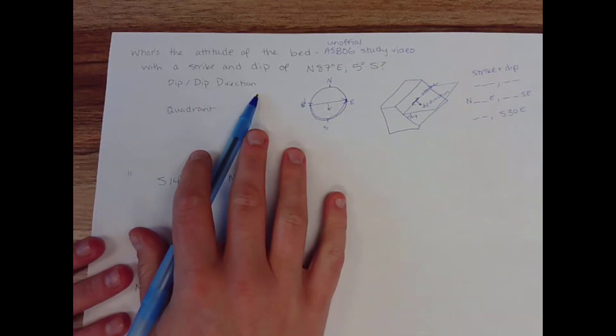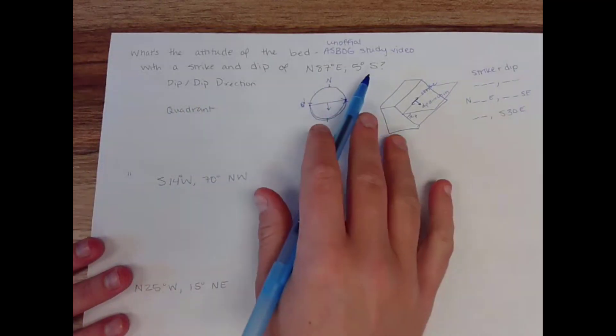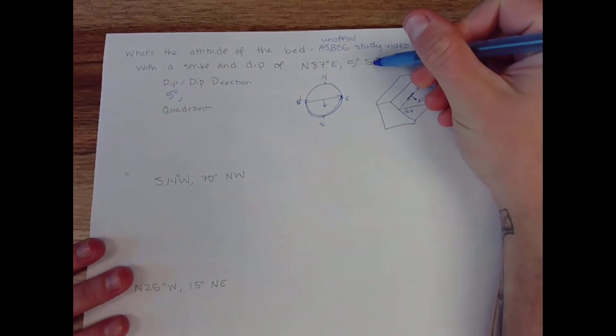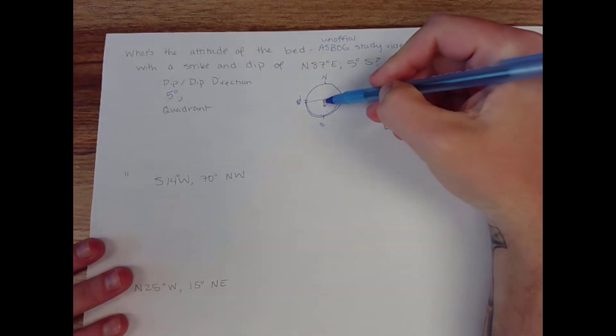And I'm going to write this as dip, dip direction. So my dip is five degrees. But now south is not enough, because south doesn't give me this exact position. So what you're going to do is just add 90.